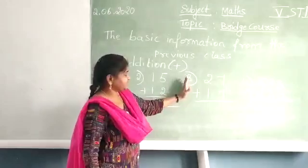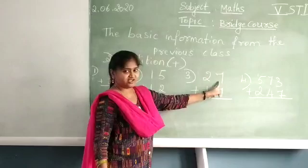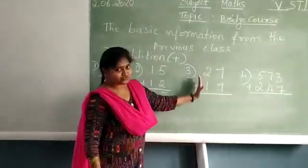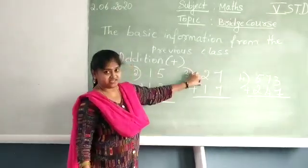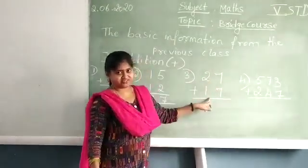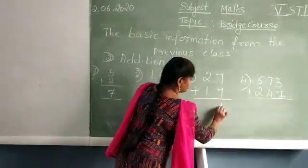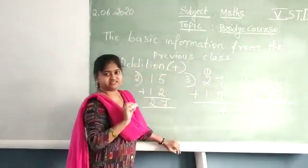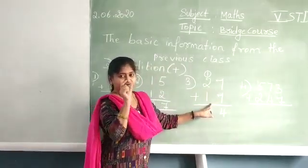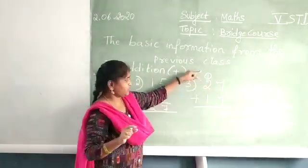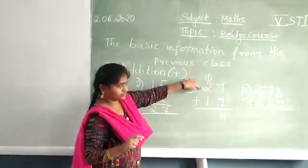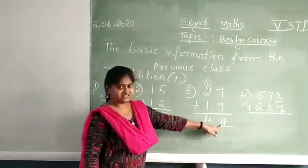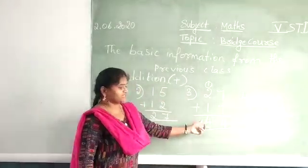Right to left. So the third sum: 27 plus 17. Both the 7s are in the ones place. So 7 plus 7 is 14 — write 4 in the ones answer column and carry 1 to the tens place. Now 1 plus 2 is 3, and 3 plus 1 is 4. So the answer is 44 — the first 4 is in the ones column and the second 4 is in the tens column.